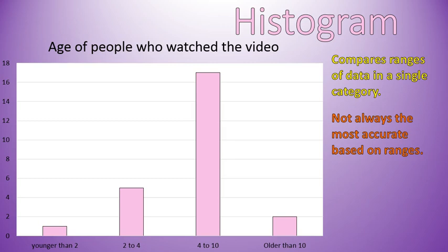The challenge with this histogram is that the ranges are not consistent, and that's something to look for carefully. Four to ten is a range of six years, whereas less than two is only two years, two to four is only two years, and older than ten could go up to 99 or 100 years old. So this is an example of a bad histogram for critical thinking purposes. You want consistent age ranges, and you can ask similar questions to bar graphs — for example, how many more people between ages four to ten watched this video than people older than ten.